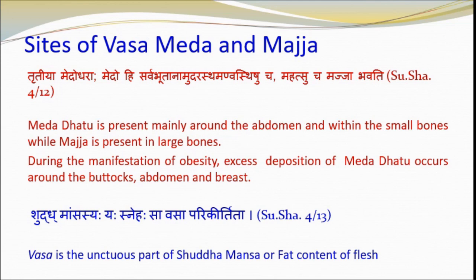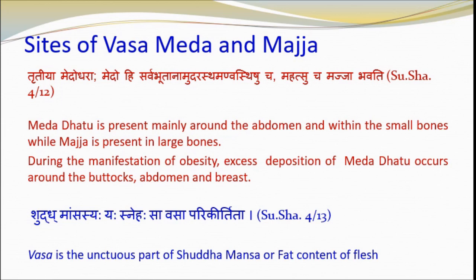Shushrut has mentioned that Vasa is the unctuous part of Shuddha Mansa, or the fat content of flesh. Normally the abdomen is considered the collecting site of Vasa, and during obesity this collection increases further, including in other parts, though abdomen is the principal site. In the body, deposition takes place mostly below the skin in subcutaneous tissues, and also in the omentum known as Vapa Vahen. Vapa means carrying of Vasa. Charak has considered Vapa Vahen among the fifteen costa. Chakrapani has mentioned Vapa Vahenam as Medha Sthanam. For bodily Sneha in Ayurved, four terms are used: Majja, Vasa, Medha and Sarakta Medha.